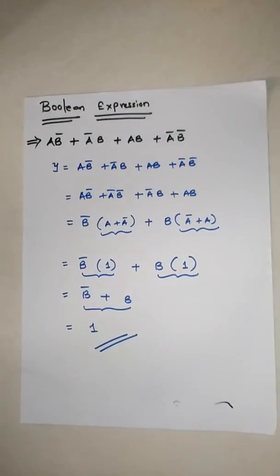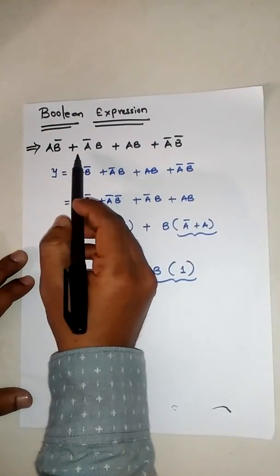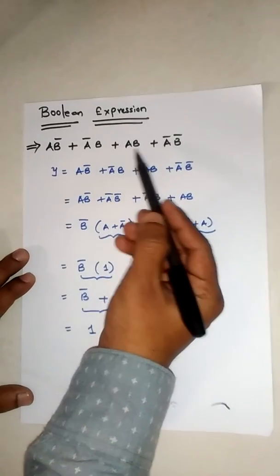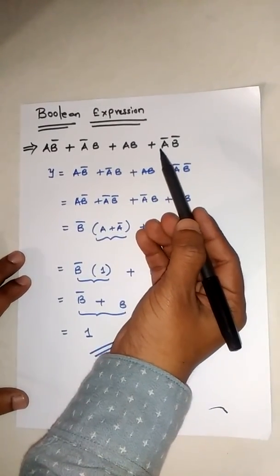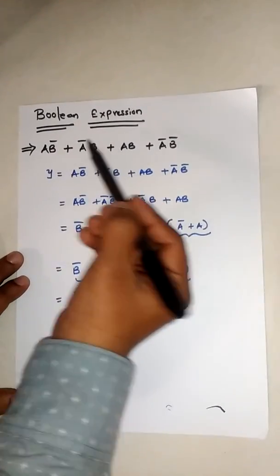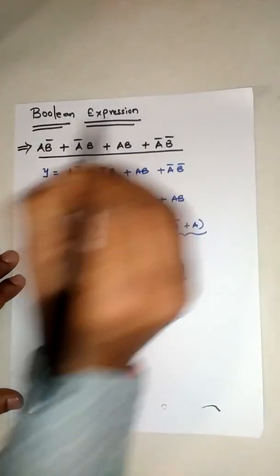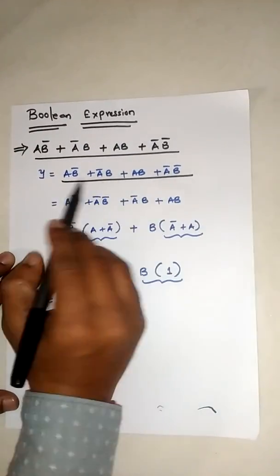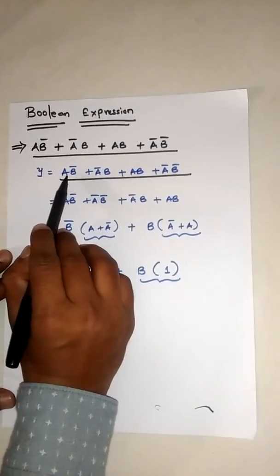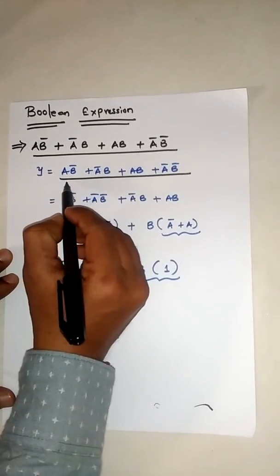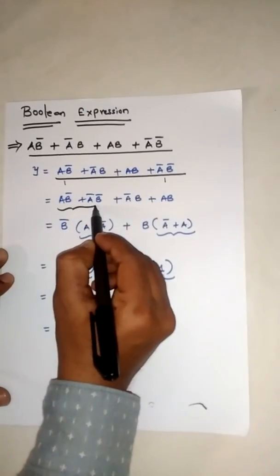Boolean expression AB̄ + ĀB + AB + ĀB̄. First of all, Y is equal to the given equation. In this, if we rearrange the terms, so first and last like this, and these two here.